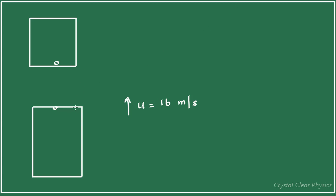Let's say the time it takes is t seconds — that is the time from the moment the bulb detaches itself from the ceiling to the moment it hits the floor. During this time, the displacement of the bulb is given by our familiar formula, ut plus half at squared. Since the bulb is falling freely, and taking upward as positive with gravity negative, the displacement is 16t minus 5t².